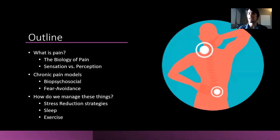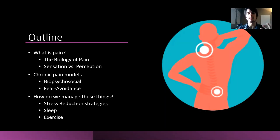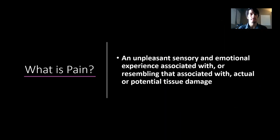A very specific topic — nuances in words and how our bodies interpret them — is important to understand. We're going to then move forward to chronic pain and the models of how our bodies respond to injury and pain: a biopsychosocial model and a fear-avoidance model. After that we'll touch briefly on stress reduction strategies, sleep, the importance of exercise, and managing pain despite symptoms.